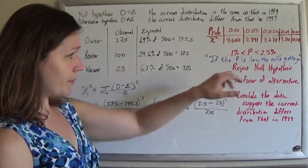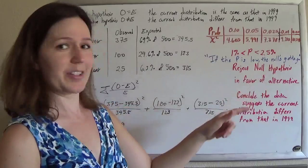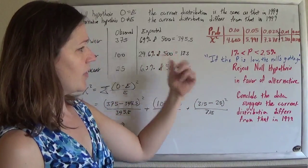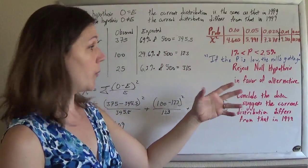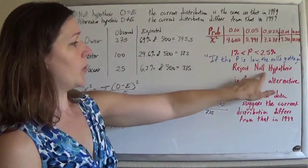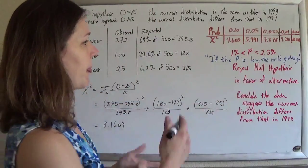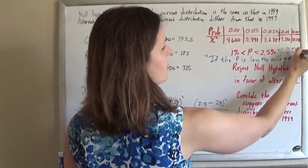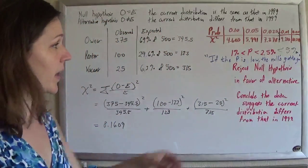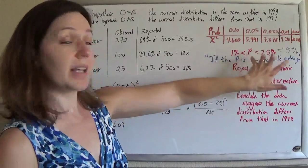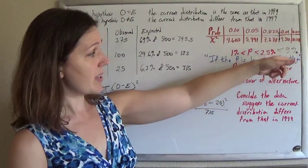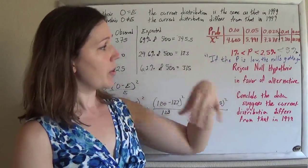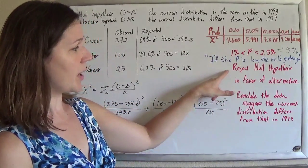So it seems, and this is the mantra that I stole from another tutor, if the p is low, the null's got to go. So this null, we reject it. So if the p is less than the significance level, so in this case our significance level was 5%, and the p, no matter what it was in that range, is definitely less than 5%. So the p is low, the null's got to go. We reject the null hypothesis.